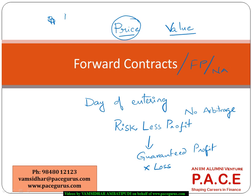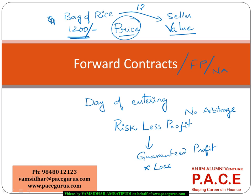Let's say we are talking about a bag of rice. Today in the market it is available for 1200 rupees. One option is to buy this bag of rice today for 1200. The other option is to get into an agreement with the seller that you will buy rice at 1210 after 3 months, and the seller has agreed to it.